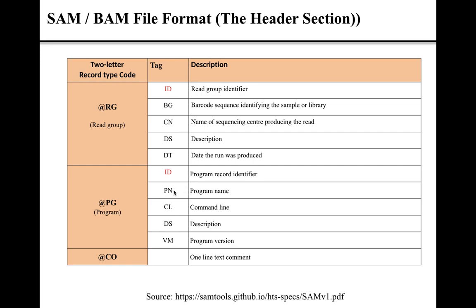The value of the PN tag describes the program name. The value of the CL tag of the PG line is the command used to generate the alignment. The value of the DS tag is the description about the program. The value of the VN tag represents the version of the program.